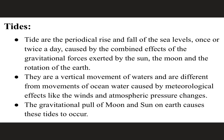The other important topic is tides. Tides are the periodical rise and fall of sea levels, once or twice a day, caused by the combined effect of gravitational forces exerted by the sun and moon, and the rotation of the Earth. The external forces of the sun and moon — their gravitational pull — are the main influence on tides. Tides are vertical movements of water, different from movements caused by meteorological effects like winds and atmospheric pressure changes.